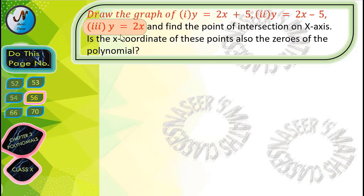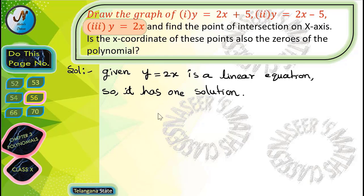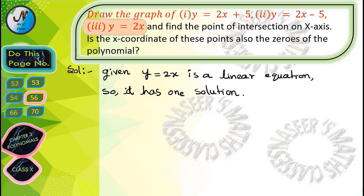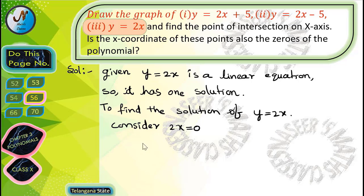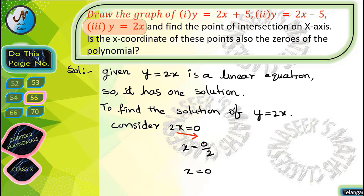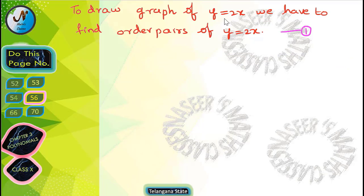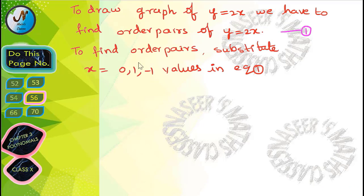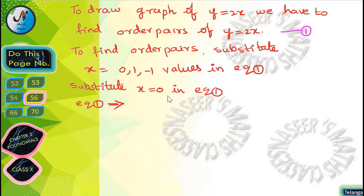Now we draw the graph of y = 2x. This is a linear equation with one solution. To find it, consider 2x = 0, so x = 0/2 = 0. The solution is x = 0. To draw the graph we find ordered pairs by substituting x = 0, 1, and -1 in equation 1.